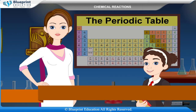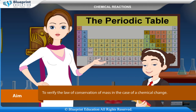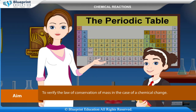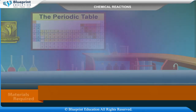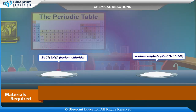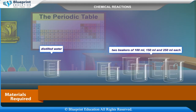Our aim is to verify the law of conservation of mass in the case of a chemical change. The materials required are barium chloride, sodium sulfate, distilled water, and 2 beakers of 100 ml.